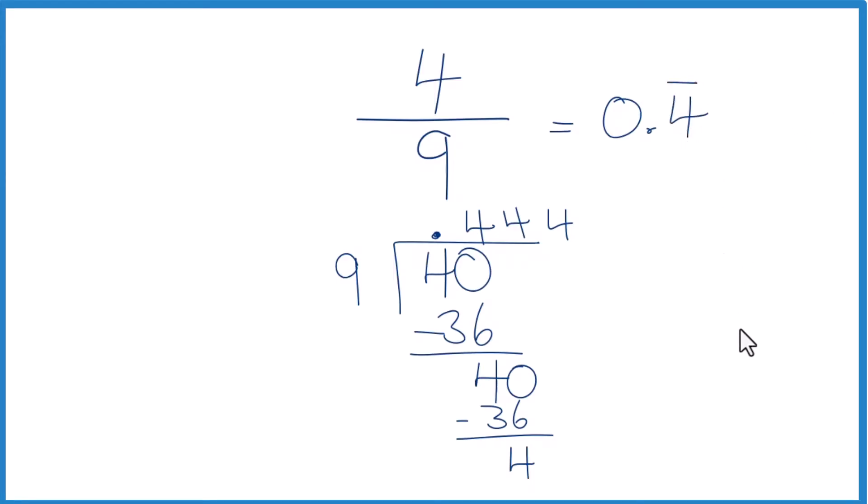This is Dr. B converting the fraction 4 ninths to a decimal. The answer, 0.4444 repeating, or just 0.4 with a bar over it to show that it repeats. Thanks for watching.